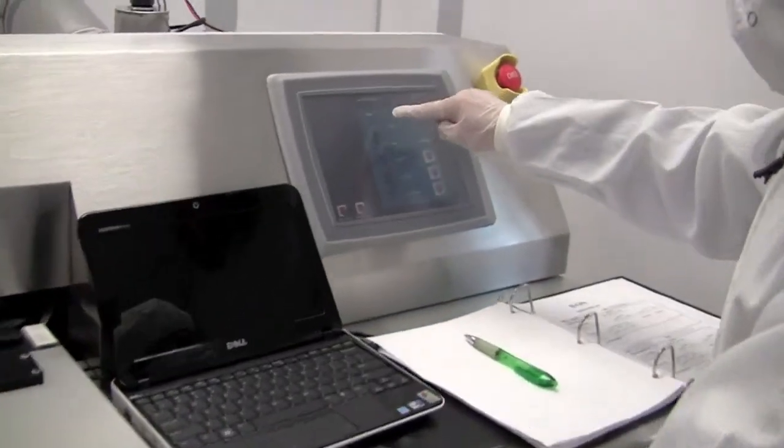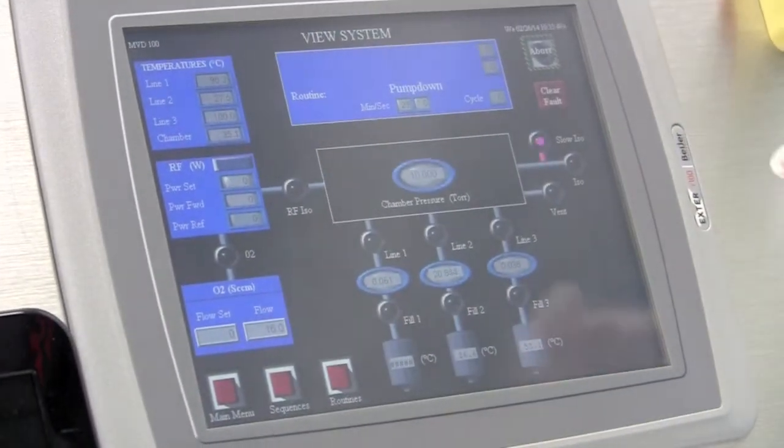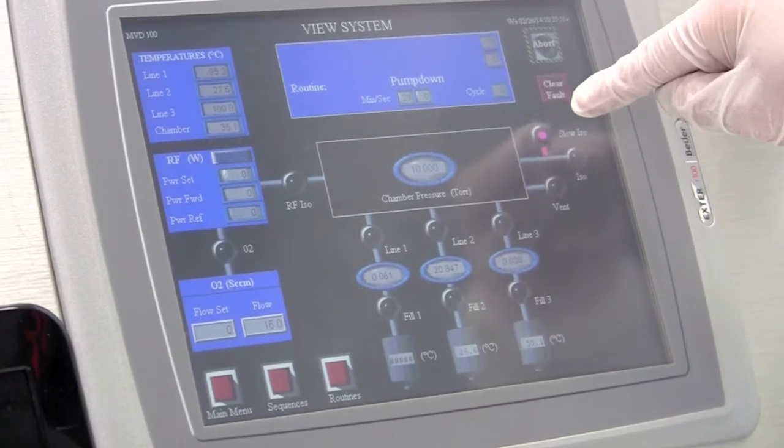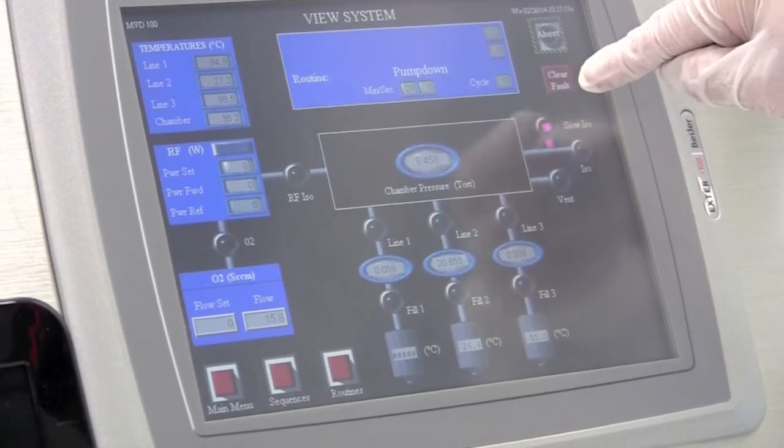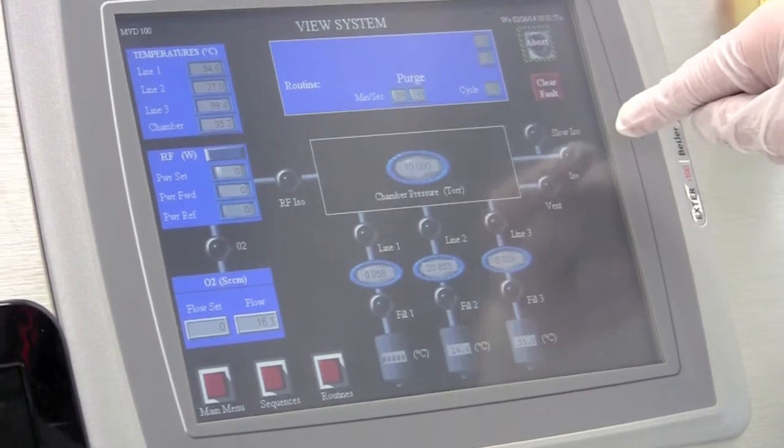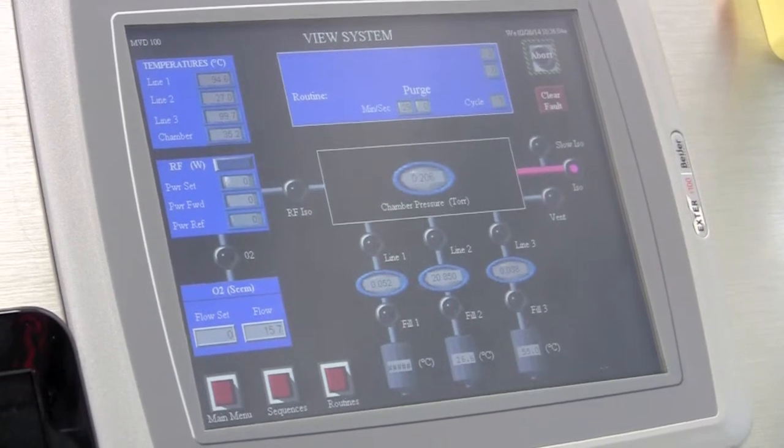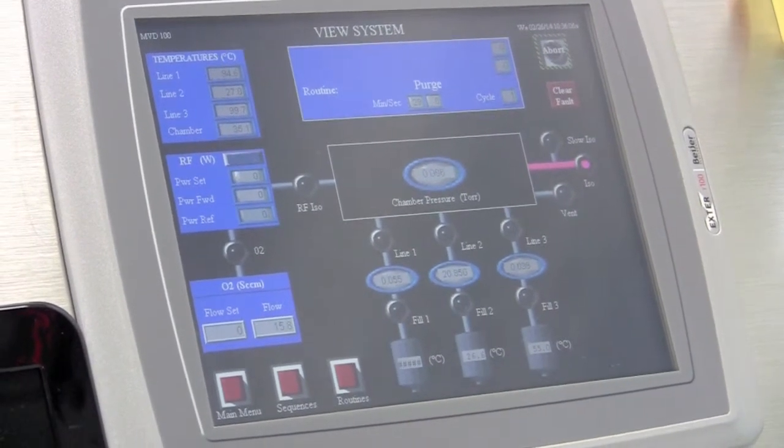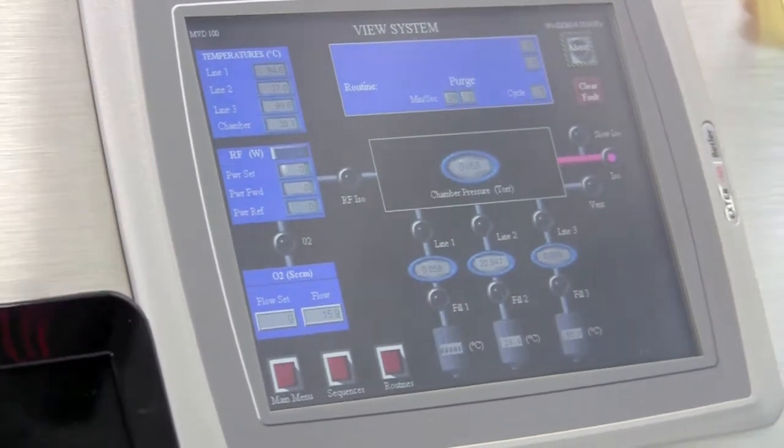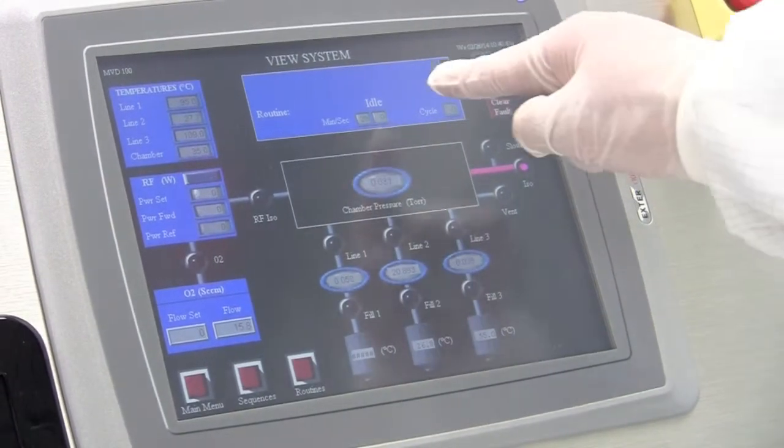Then pump down the chamber by touching this. You see, first you will see the slow ISO valve is open and then closed. Then the ISO valve is open. By doing so, the sample in the chamber won't move. Now we loaded the sample. The system is at idle mode. The next step is to run the sequence.